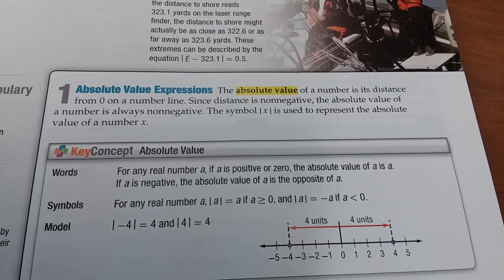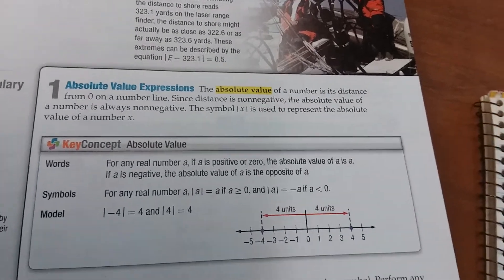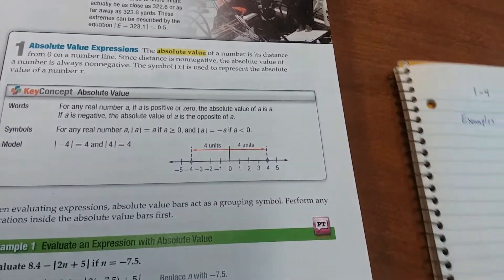Zero is the only example where the absolute value is going to be non-positive. So let's look at some quick examples.